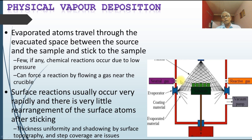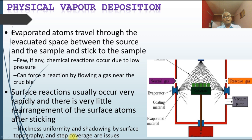The evaporated atoms travel through the evacuated space between the source and the sample. The material comes from the evaporator and sticks to the substrate placed in the chamber, which is fully vacuumed. Surface reactions occur very rapidly and there is very little rearrangement of surface atoms after sticking. Uniform thickness and shadowing by surface topography and step coverage are issues — sometimes uniform thickness film is not obtained, which is a disadvantage of PVD.